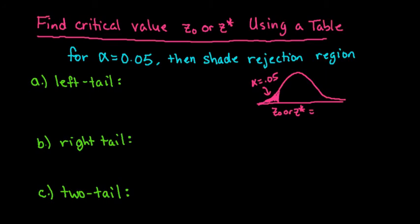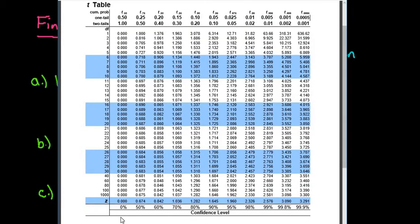So if I pull up the table, what I would do is, since we have a left-tail, this would be a one-tail test, and I would go to 0.05, and then I would scroll to the very, very bottom of that row, and we see that it's 1.645.